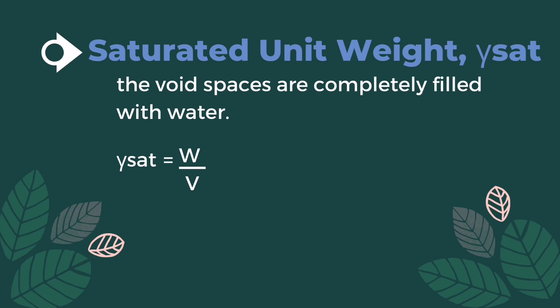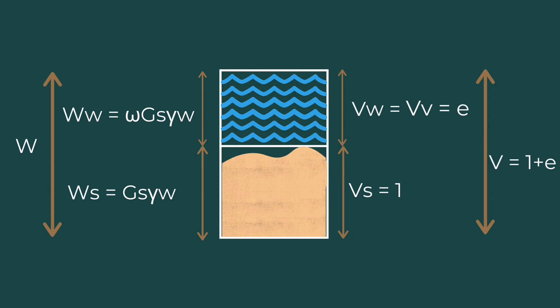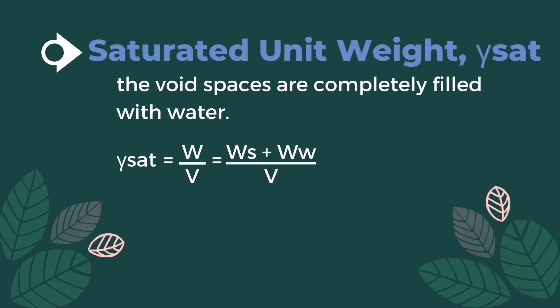Next is the saturated unit weight. When the void spaces are completely filled with water, as shown in the illustration, there is no air — all void spaces are water. The volume of water here is equal to the volume of voids, which equals the void ratio. Going back to the formula: saturated unit weight equals total weight divided by total volume.